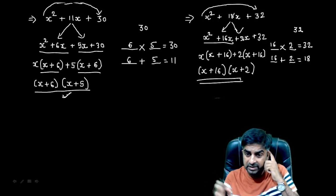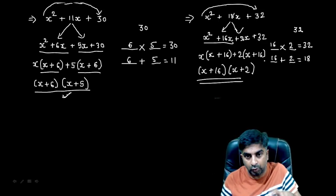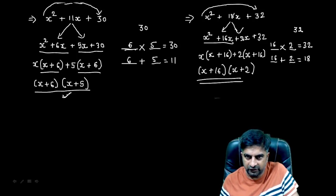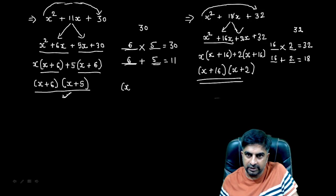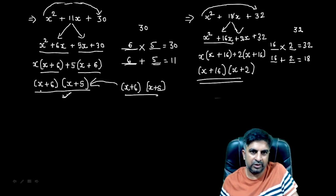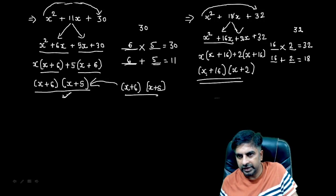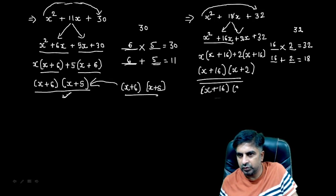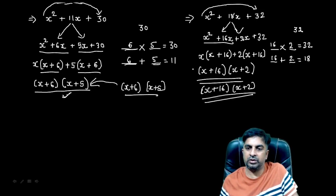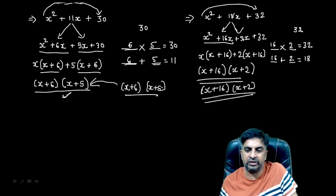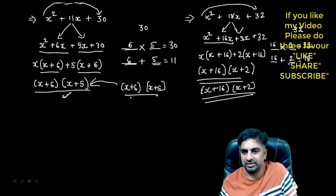Now I can tell you the short trick directly. Whatever factors you are getting — if the coefficient of x² is 1 — you can directly write them down. For example, in the first problem the factors were 6 and 5, so you write x + 6 and x + 5. In the second, the factors were 16 and 2, giving x + 16 and x + 2. You can do this directly, but you need to show the full method in examinations.